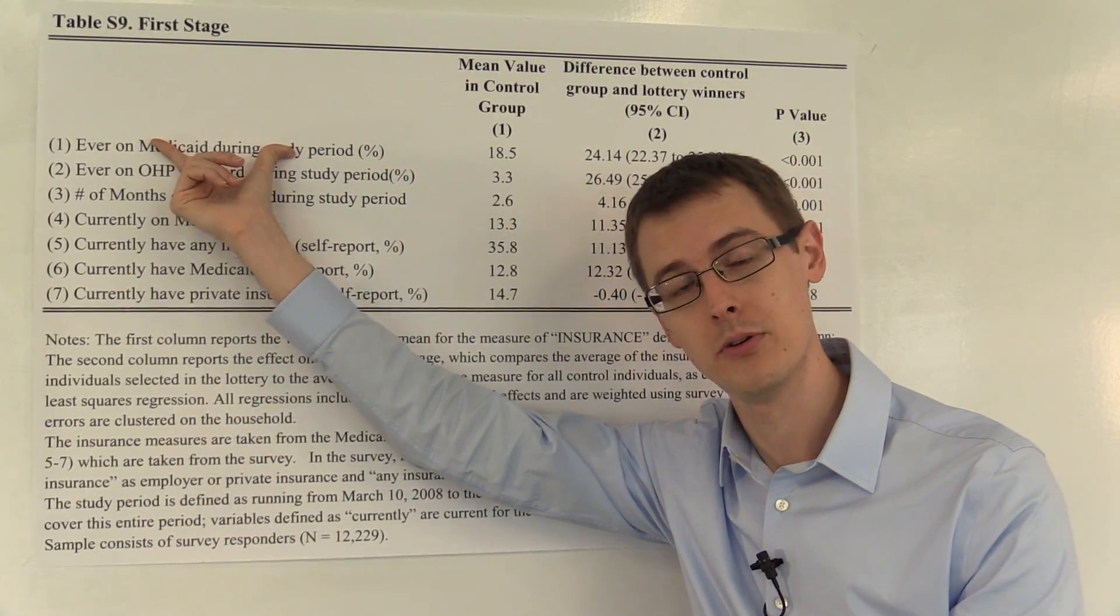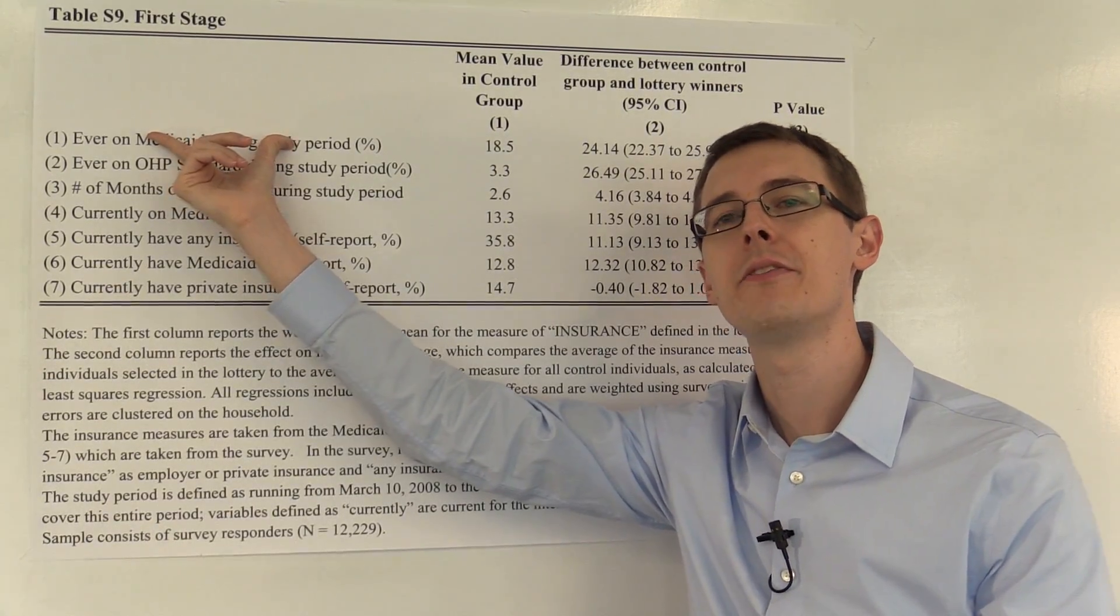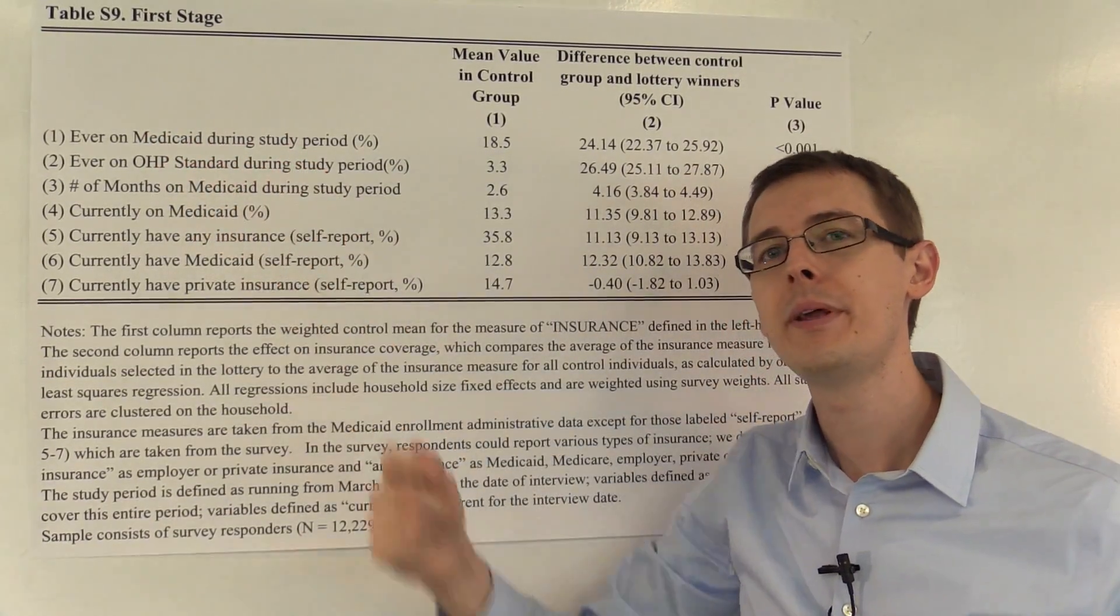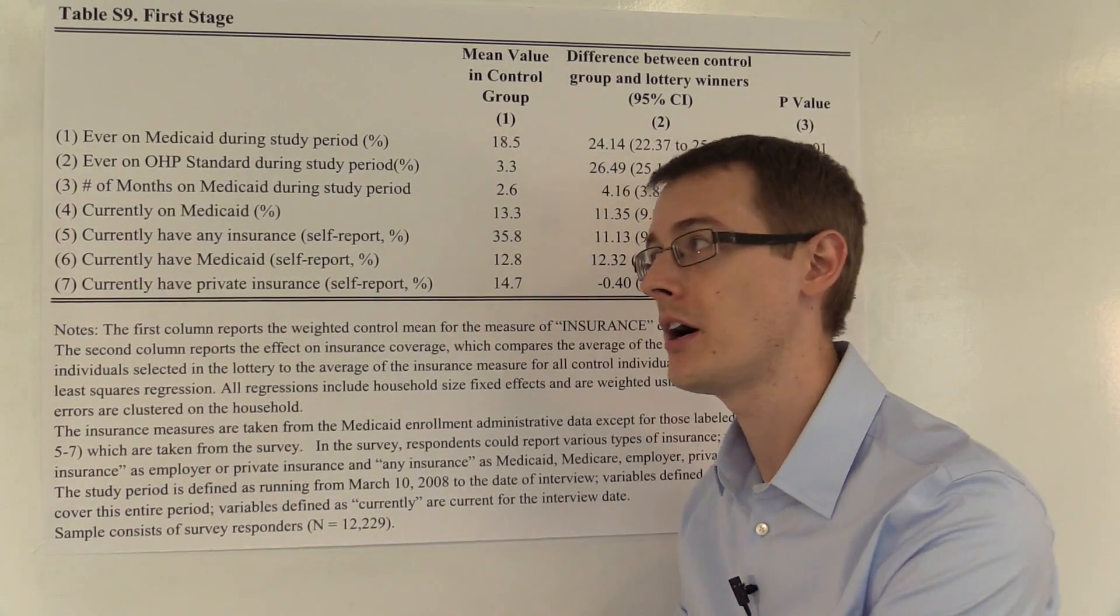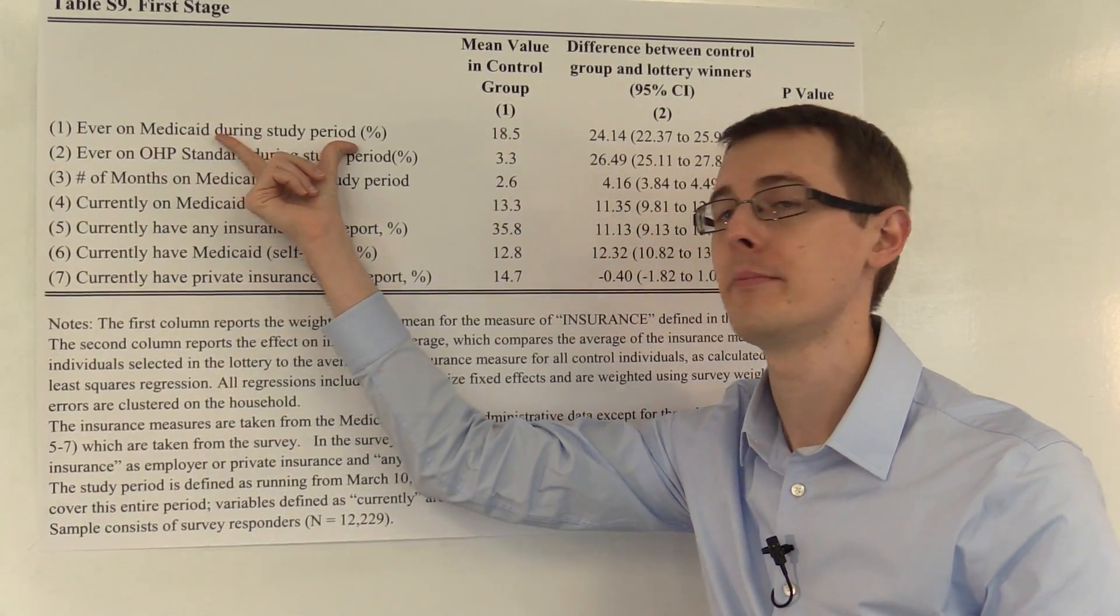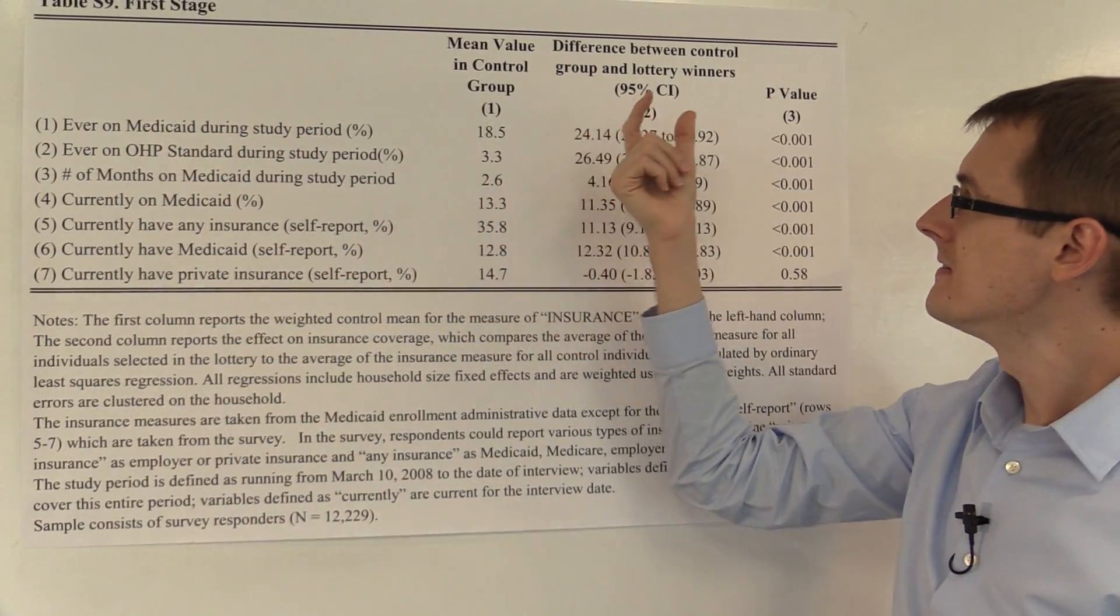So this is now our outcome variable, because we want to know what's the effect of the instrument, being assigned to receive Medicaid, on the outcome, actually receiving Medicaid.